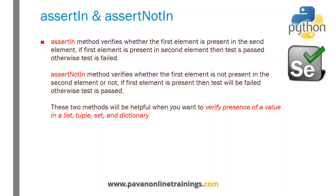assertIn is an assertion that verifies whether the first element is present in the second element. If the first element is present in the second element then the test passes, otherwise the test fails. Similarly, assertNotIn verifies whether the first element is not present in the second element. If the first element is present then the test will fail, otherwise the test will pass.